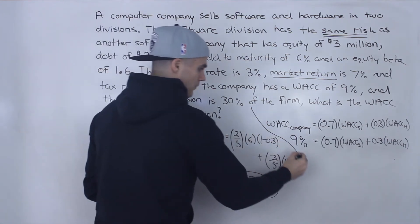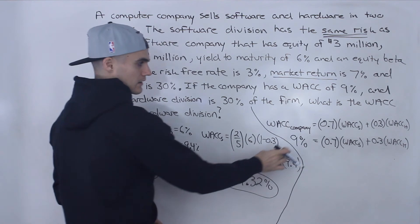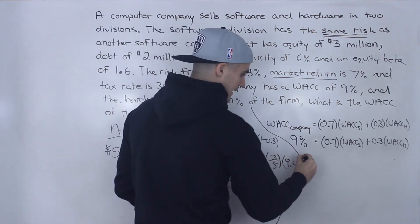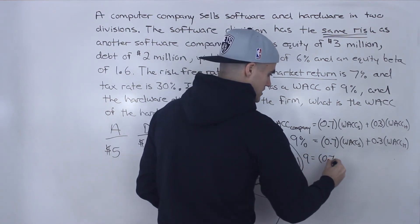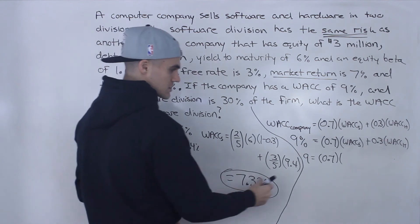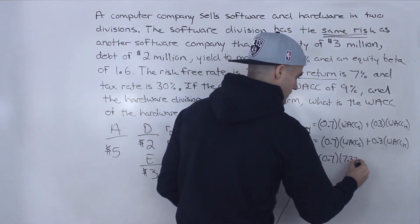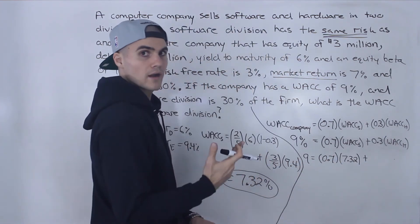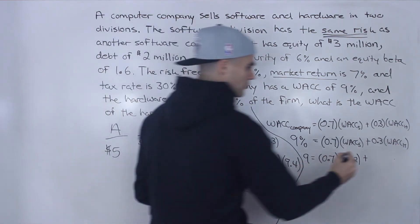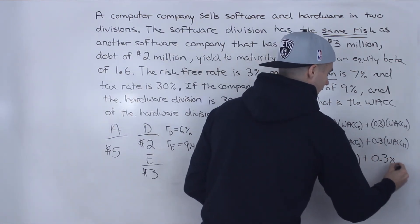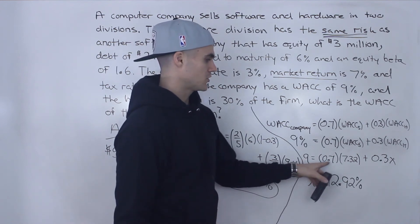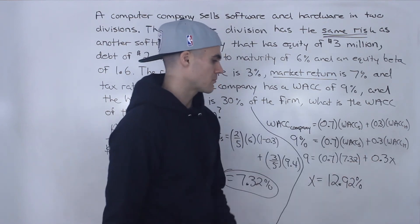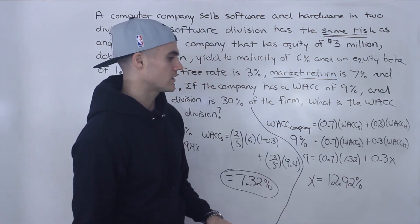Now we can plug everything into the equation from earlier: 9 = 0.7 × 7.32 + 0.3x, where x is the WACC for the hardware division. Multiplying 0.7 × 7.32, bringing that term over, subtracting from 9, then dividing both sides by 0.3, you end up getting x = 12.92%. That is the WACC for the hardware division.